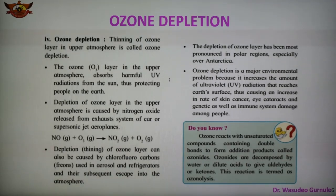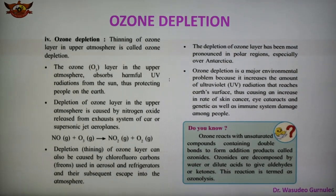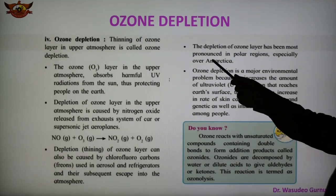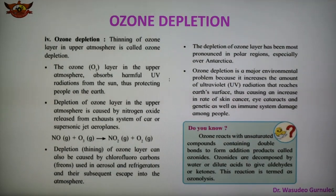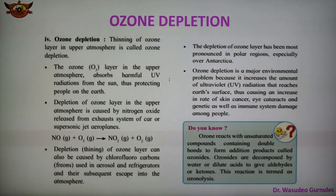Ozone layer depletion is also caused by chlorofluorocarbons (CFCs), commonly known as Freon, used in aerosols, refrigerators, and air conditioners. CFCs react with ozone and reduce its concentration. Depletion of the ozone layer also occurs in the polar regions, especially over Antarctica. Ozone depletion is a major environmental problem as it increases the amount of UV radiation reaching the earth's surface, causing increased rates of skin cancer, eye damage, and genetic and immune system damage.